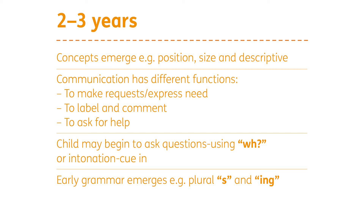Around two to three years, children start to develop WH questions — things like 'what's that?' and as we often know, children between two and three develop that 'why' question. If they don't necessarily use WH questions verbally, you might see a rise in their intonation — the way their voice goes up at the end — indicating a question. Early grammar may also emerge — an 'S' on the end of a word to show a plural, so 'socks' versus 'sock,' and the '-ing' ending, so instead of saying 'jump' we might get 'jumping.' There's a real big leap between two and three in the complexity of language you'll be hearing.